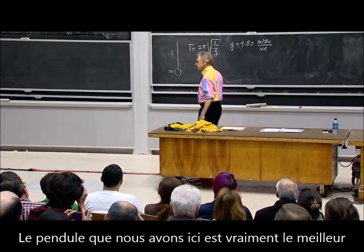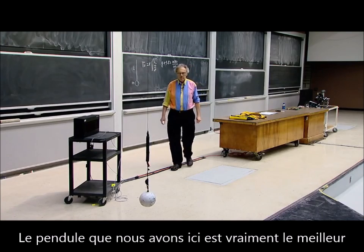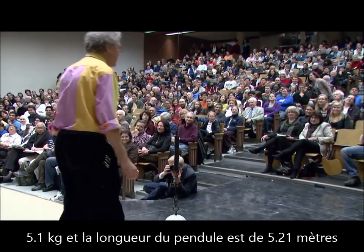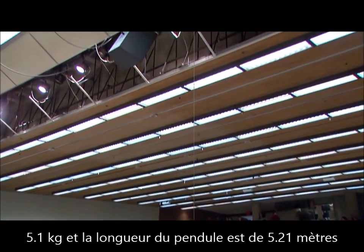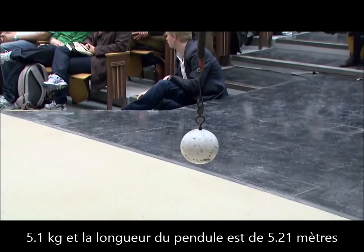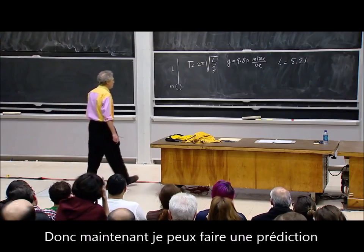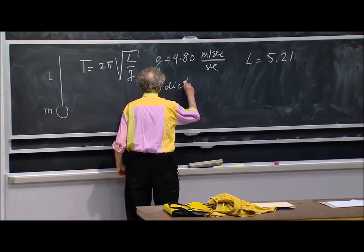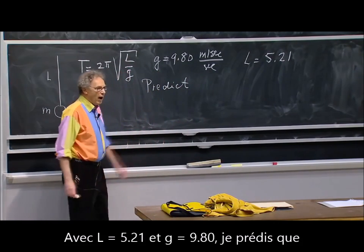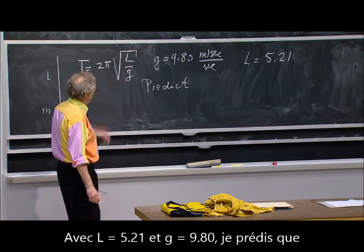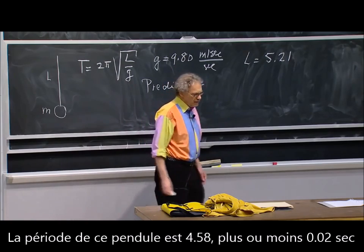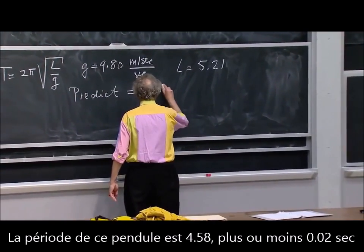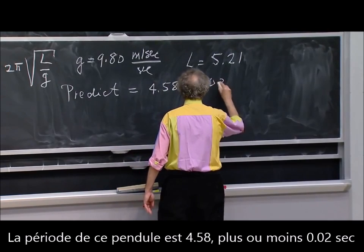Our pendulum here is really the mother of all pendulums. 15 and a half kilograms, and the length of this pendulum is 5.21 meters. So now I can make a prediction using this equation. I put in 5.21, I put in 9.80, I multiply by 2 pi, and I predict that the period of that pendulum is 4.58 plus or minus 0.02 seconds.